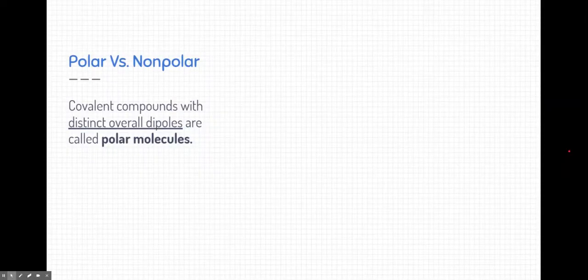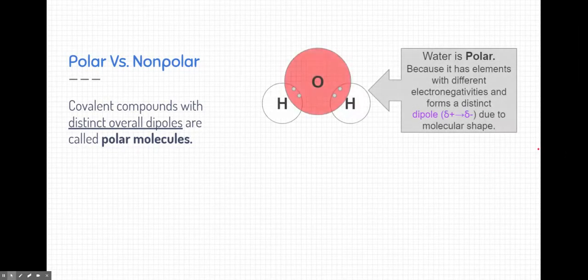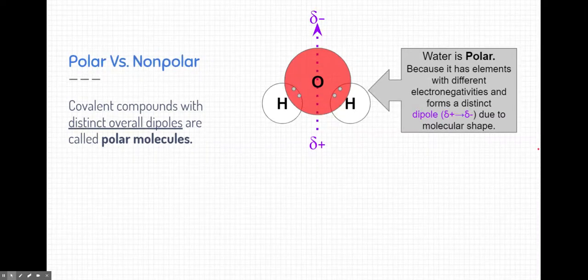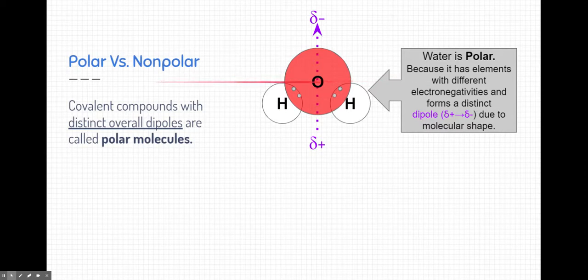Now, certain elements or certain molecules are called polar versus nonpolar depending on how their dipoles work. If they have distinct overall dipoles, we would call them a polar molecule. Let's take a look at water for example. Water is a polar molecule. Its elements are unequally sharing electrons. Oxygen is pulling electrons towards it because it has a higher electronegativity. And there is a distinct overall dipole in this molecule because of its shape. If you were to draw a line across the middle of this molecule through oxygen having hydrogens on one side and the other half oxygen on the other, then we would see a definite dipole. The upper half of this molecule as partially negative and the lower half is partially positive.